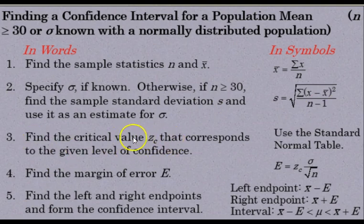Next, find the critical value z subscript c that corresponds to the given level of confidence using the standard normal table. Then find the margin of error E using the formula z subscript c times the population standard deviation divided by the square root of n. Finally, use that to find the left and right endpoints that form the confidence interval. The left endpoint is x bar minus E, and the right is x bar plus E, with the interval expressed as x bar minus E is less than mu is less than x bar plus E.